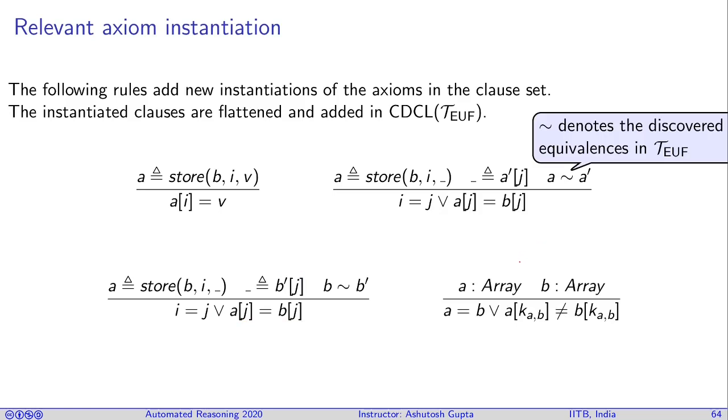And similarly, if you have two arrays in your system, you may want to introduce this fact that either those two arrays are equal, or there is some position k, which is a parameter of a and b, such that they are different. This is the third axiom and this is arbitrarily applied.